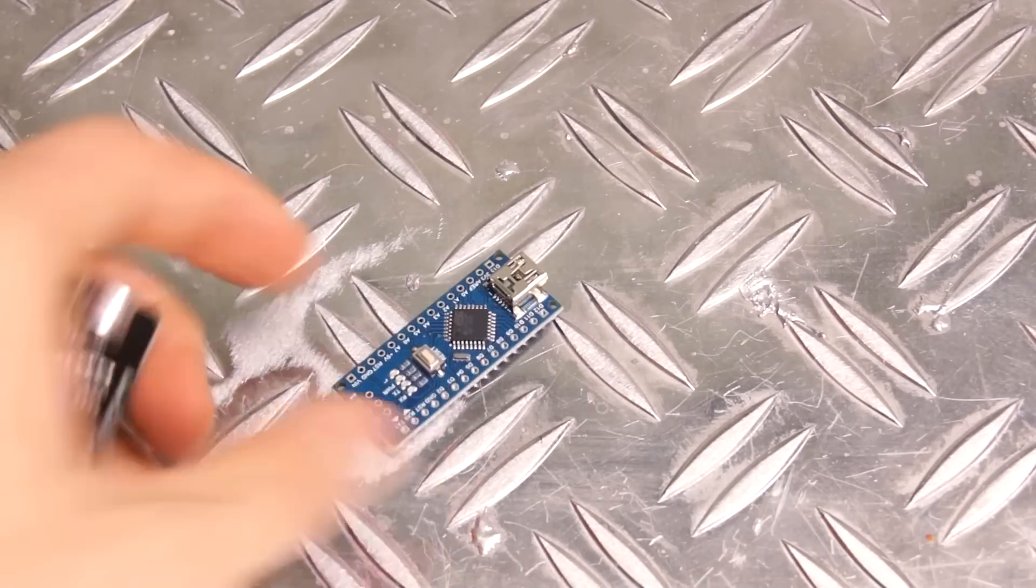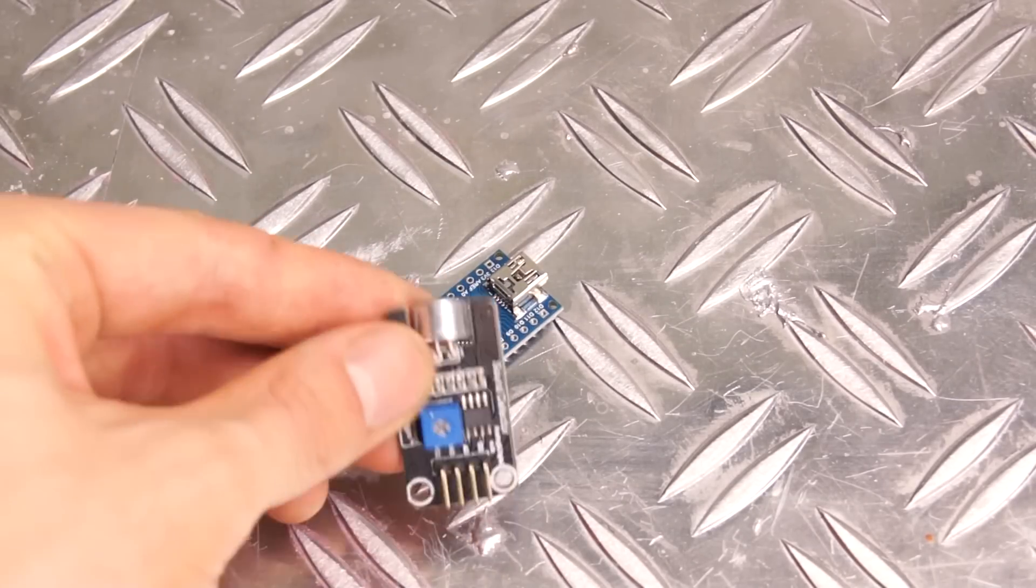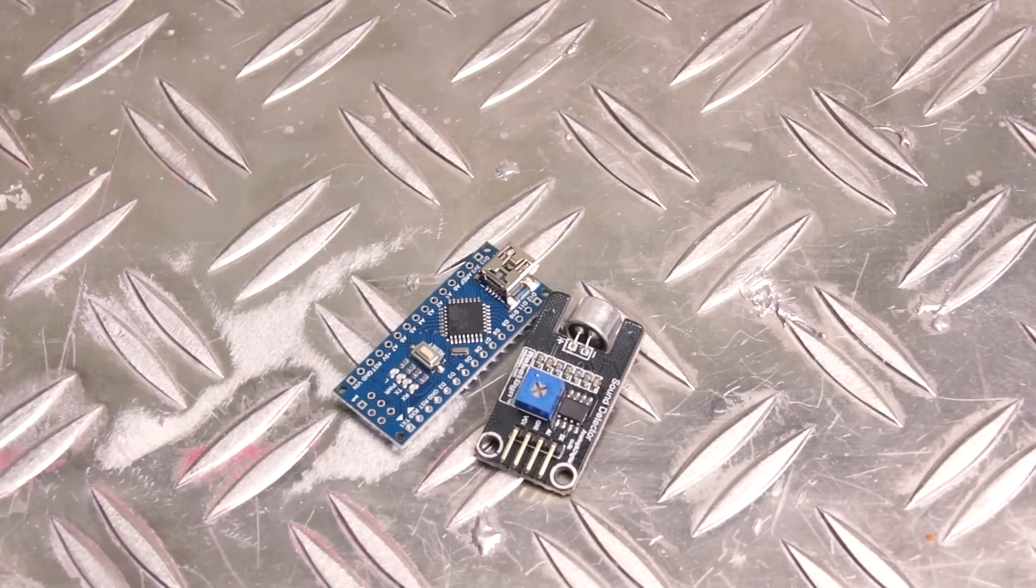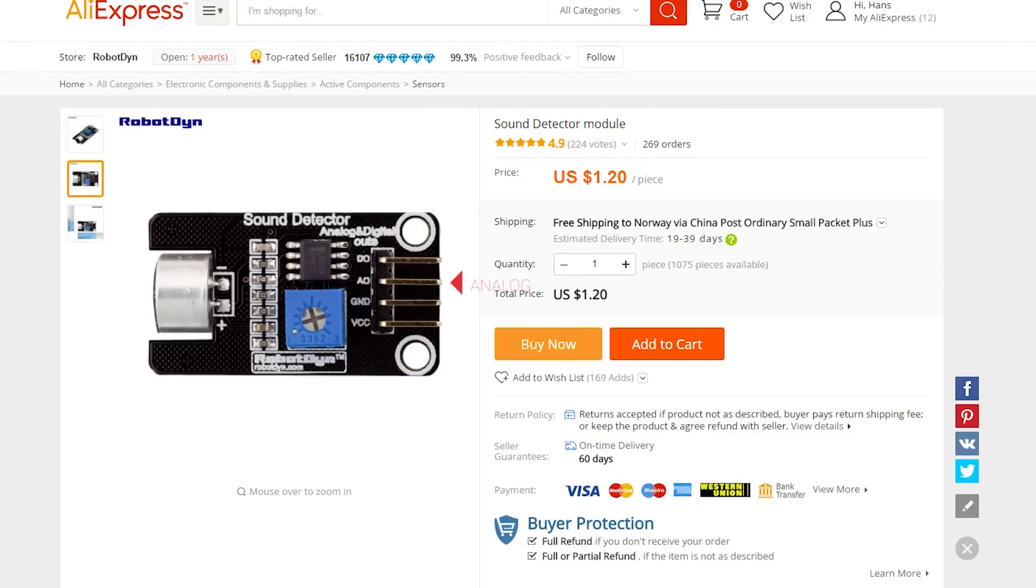The blue Arduino Nano will control the LED lights based on input from this little guy. It works like a sound sensor and it's kinda cool as it outputs a value on both the analog and digital output pin based on the surrounding sounds.